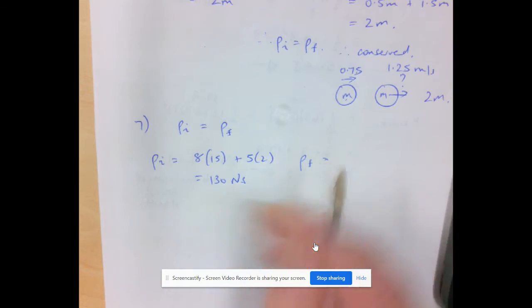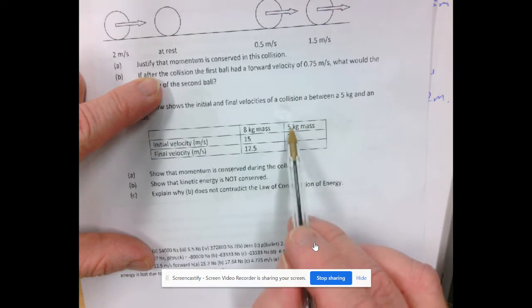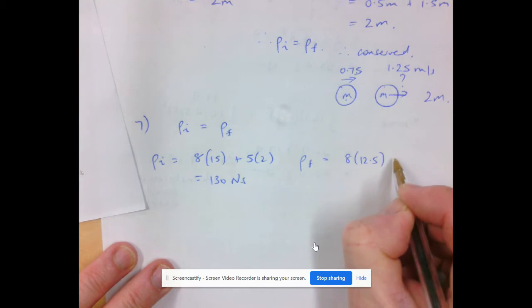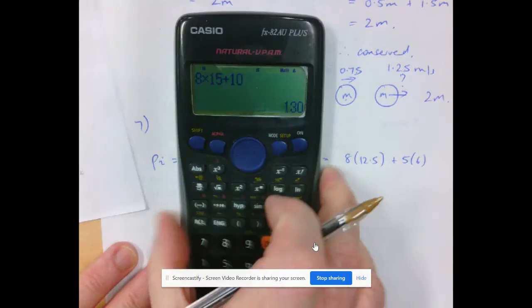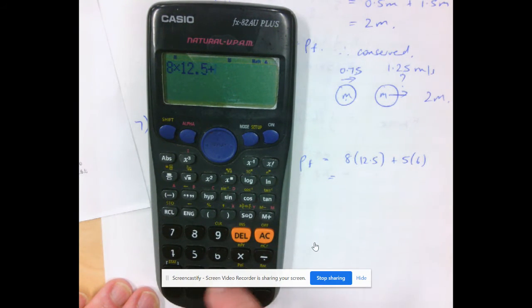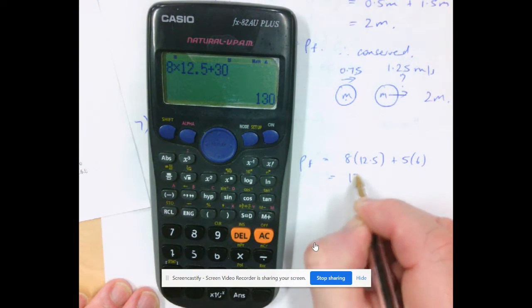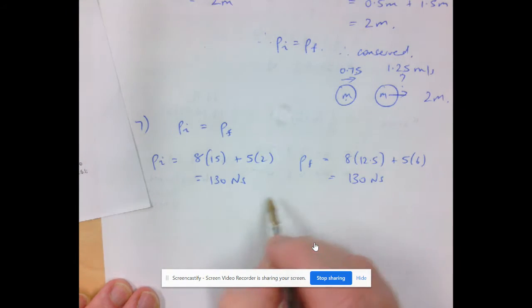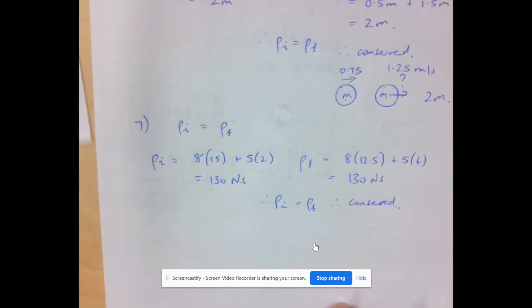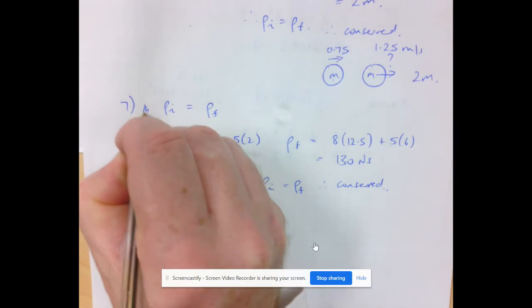Momentum final, using the table again, would be 8 times 12.5 and 5 times 6. So 8 times 12.5 plus 5 times 6, that's 130 newton seconds. Therefore, initial momentum is equal to final momentum, therefore conserved.